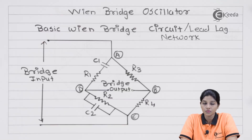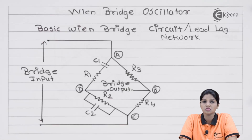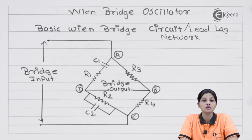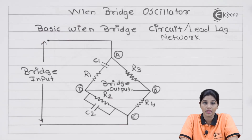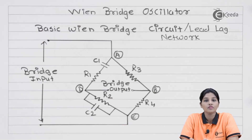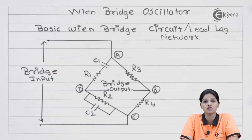Based on the component used in the feedback network, the RC oscillator is further classified into two types: phase shift oscillator and Wien bridge oscillator. In the case of a phase shift oscillator, the feedback network is formed using resistors and capacitors, and each RC network introduces a phase shift of 60 degrees. Therefore, if we connect three RC networks in a cascaded manner, the total phase shift introduced by the feedback network is 180 degrees. If an inverting amplifier is used and it introduces 180 degrees, then the total phase shift becomes 360 degrees, satisfying Barkhausen's criteria.